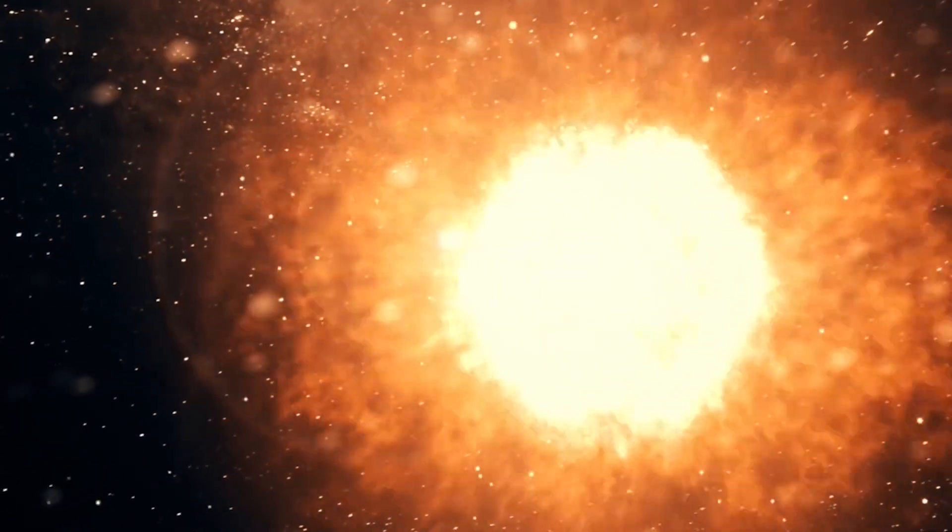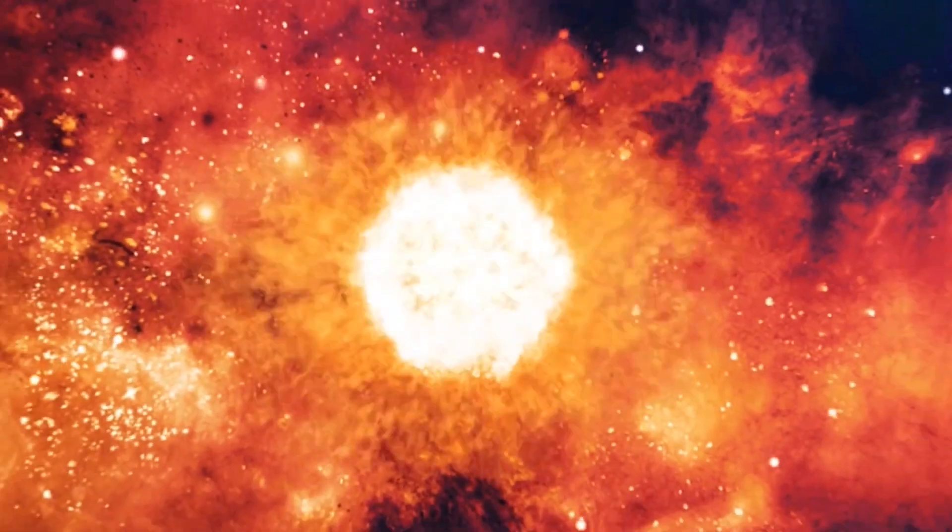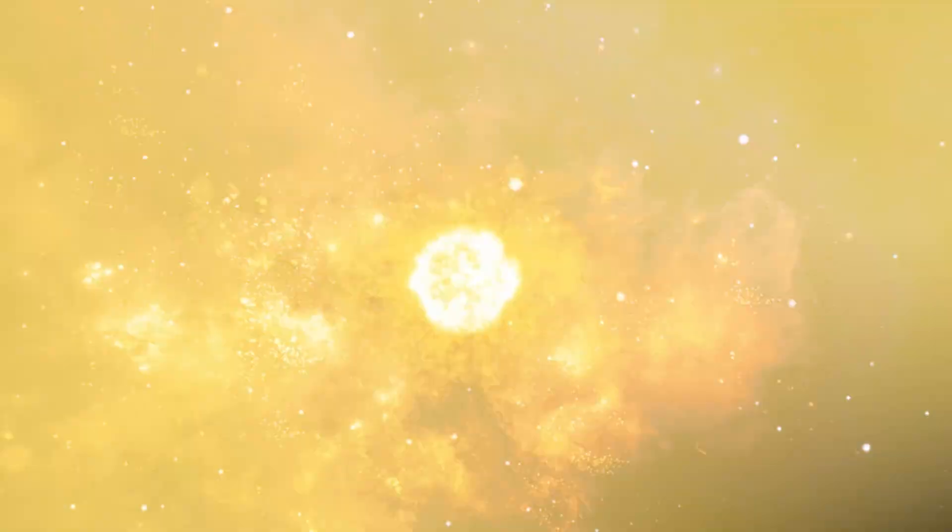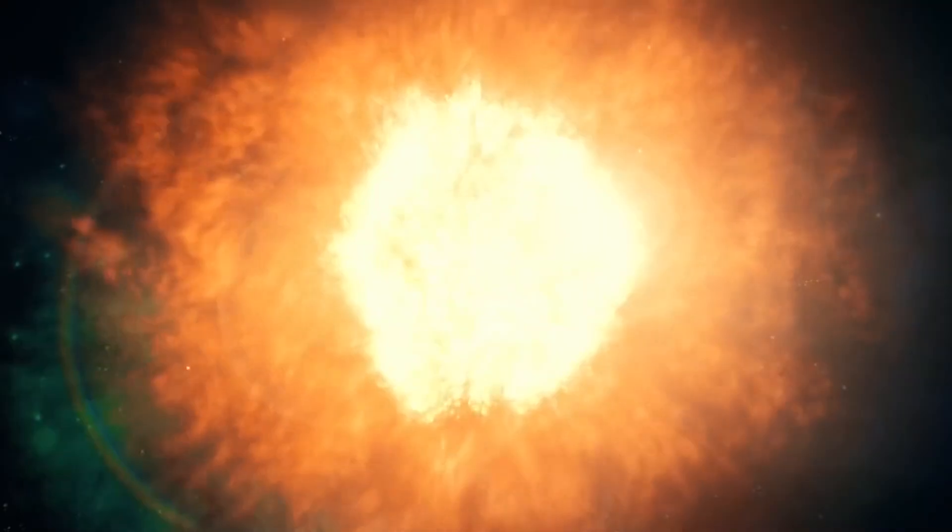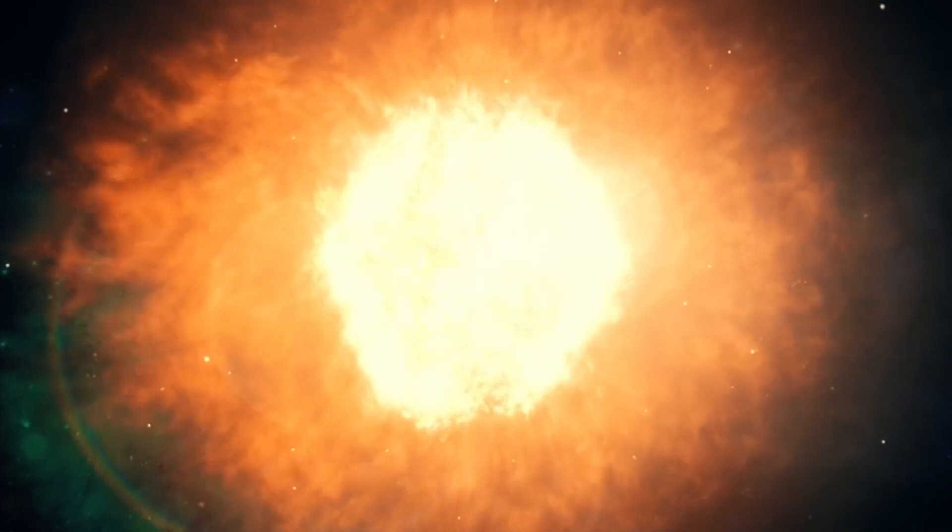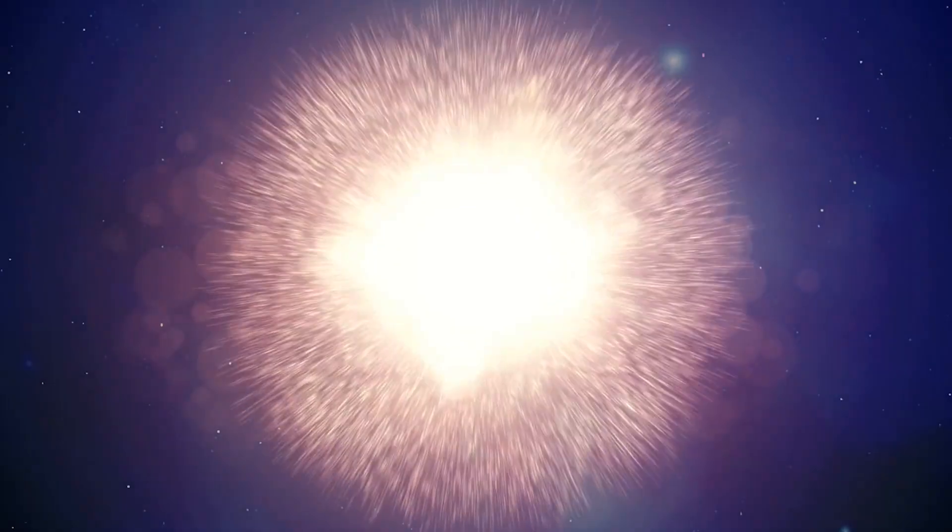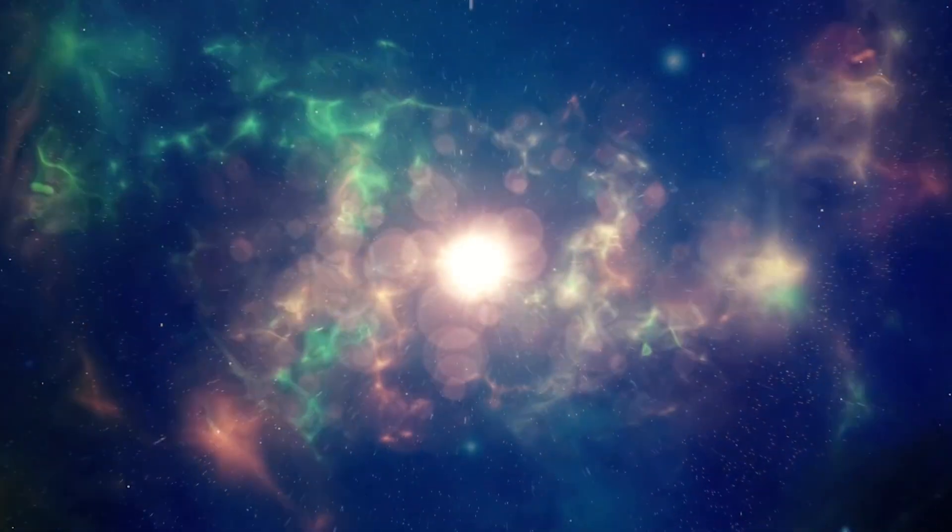As this gas spins faster, it starts heating up and becomes what is known as a protostar. This is how stars as we know them first come into existence and start their journey through life which lasts billions of years. Every star that exists starts as a giant cloud of gas and debris.